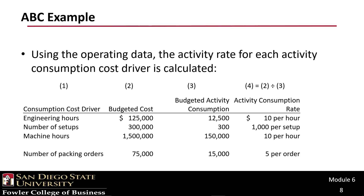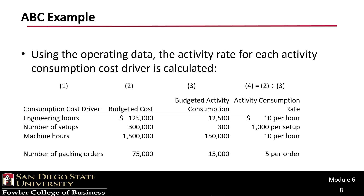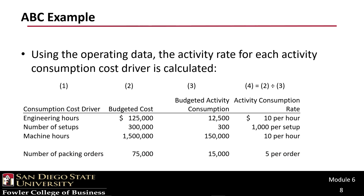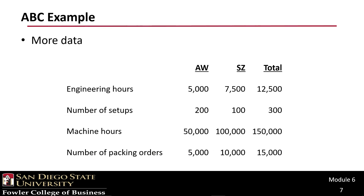Using the operating data, we can calculate the activity rate for each cost driver. Engineering: budgeted cost $125,000 divided by 12,500 total hours gives $10 per hour. Setups: budgeted cost $300,000 divided by 300 total setups gives $1,000 per setup. Machine hours: $1.5 million divided by 150,000 hours gives $10 per hour. Packing orders: budgeted cost $75,000 divided by 15,000 orders gives $5 per order. These budgeted activity consumption totals come from the previous slide.